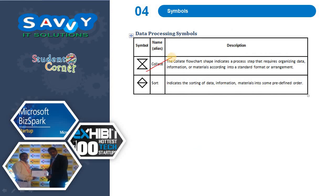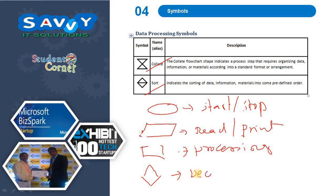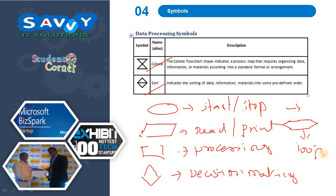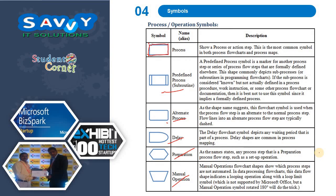This is called collate, and this is sort — these are the symbols used. Generally, people know that this is for start and stop, this is for read and print, and this is for processing. Apart from this, we are supplying more symbols used in the flowchart.